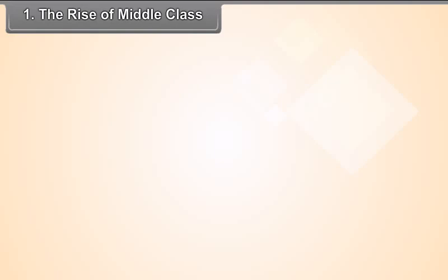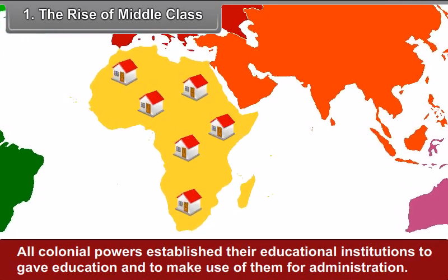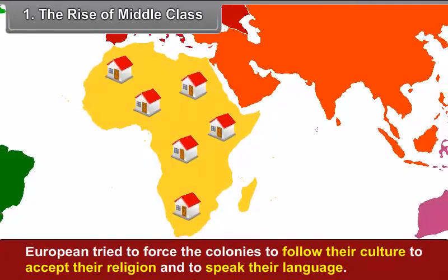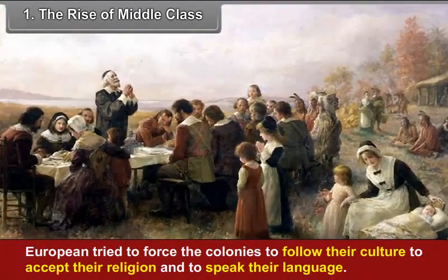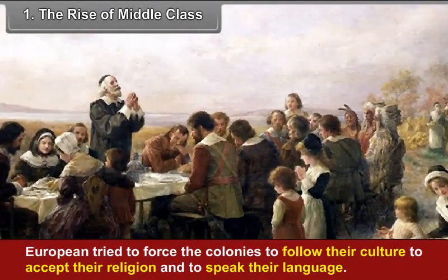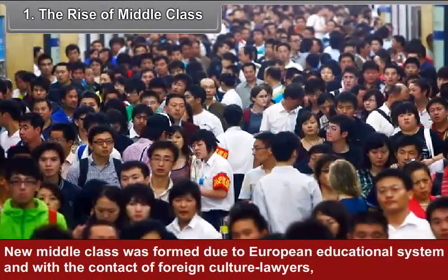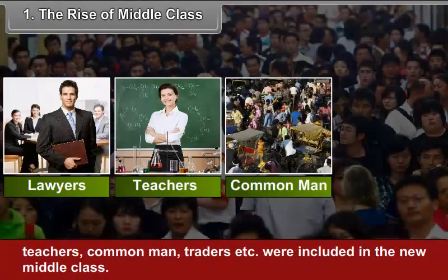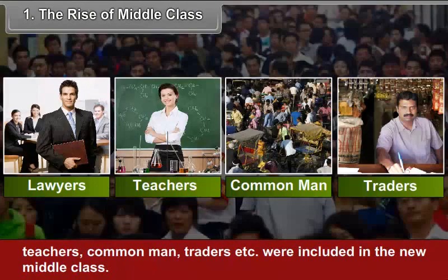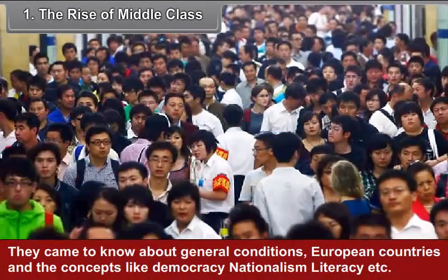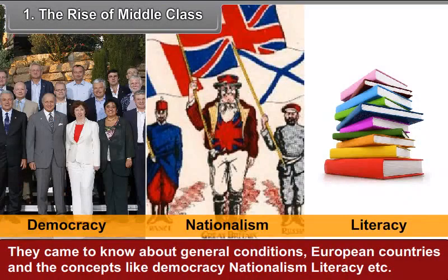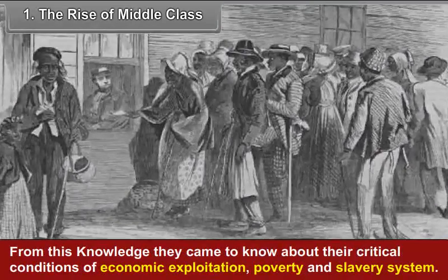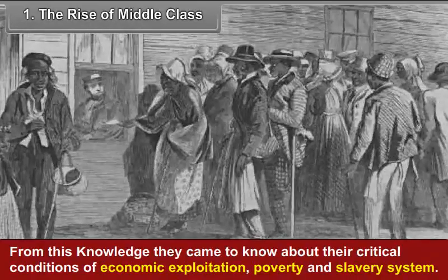First, the rise of the middle class. All colonial powers established educational institutions to give education and to make use of Africans for administration. Europeans tried to force the colonies to follow their culture, accept their religion and speak their language. A new middle class was formed due to the European educational system and contact with foreign culture — lawyers, teachers, common people, traders, etc. were included in this new middle class. They came to know about European countries and concepts like democracy, nationalism and literacy, and also came to understand the critical conditions of economic exploitation, poverty and slavery.